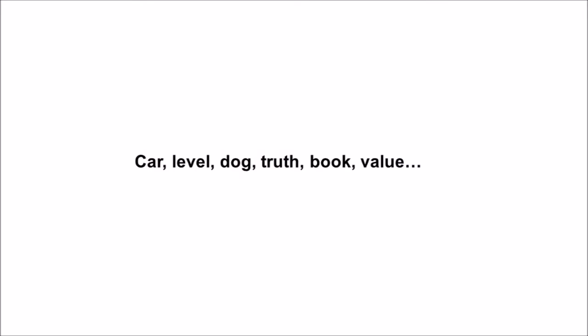To see how visual encoding works, read over this list of words: car, level, dog, truth, book, value. If you were asked later to recall the words from this list, which ones do you think you'd most likely remember?